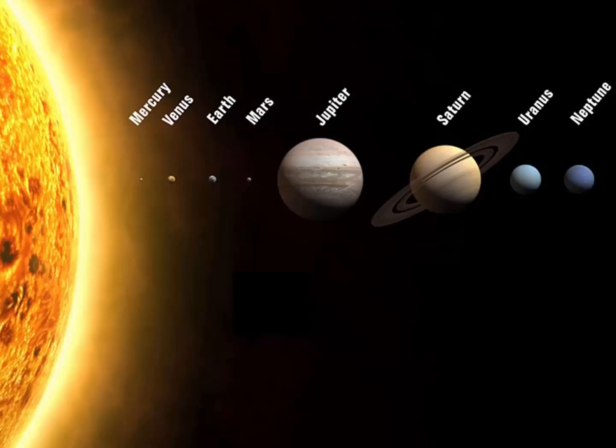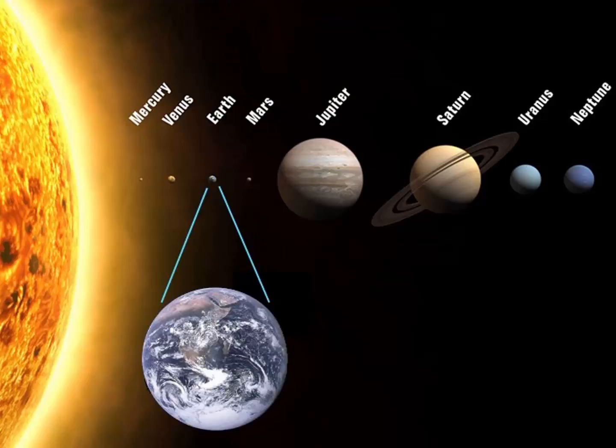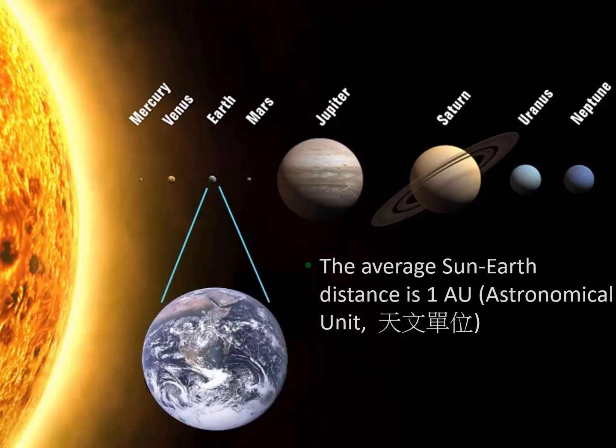However, if we put them nearby each other, you can clearly compare the sizes. The Sun is about 110 times larger in diameter compared to the Earth and 300,000 times more massive compared to the Earth. The Earth, this blue marble, is at about 1 AU, 1 astronomical unit from the Sun.